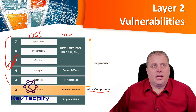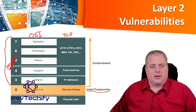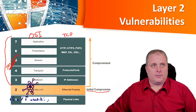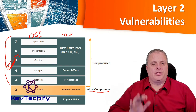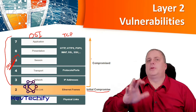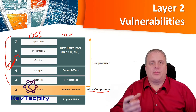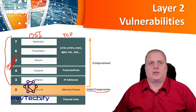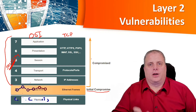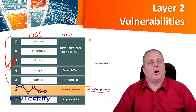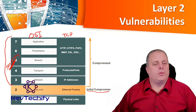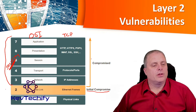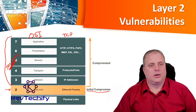If a threat actor accesses your Layer 2, gets in there, captures some Layer 2 frames, and is able to manipulate those frames and see what's in them, they can understand your network and cause a lot of problems. We need to look at Layer 2 as well. For Layers 3 through 7, we often have a pretty good handle on security, but we do need to make sure we address our Layer 2 issues.